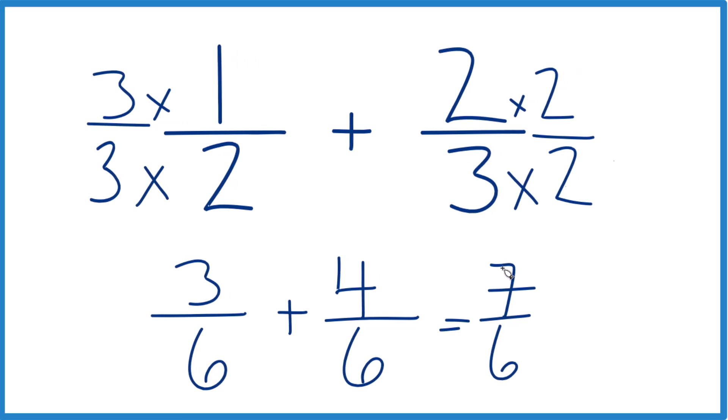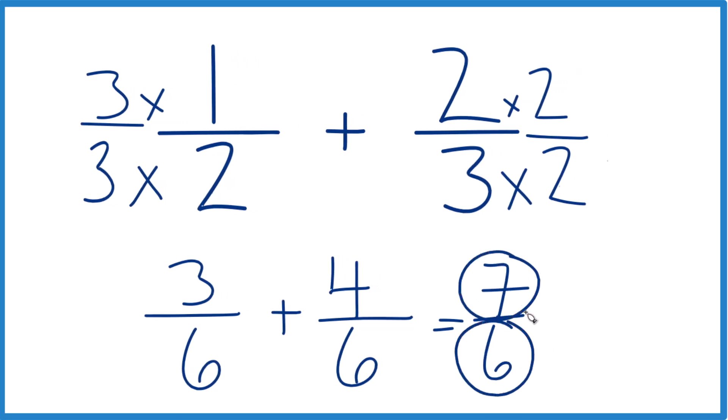This is an improper fraction because 7, the numerator, is larger than the denominator. But we can change it to a mixed number.